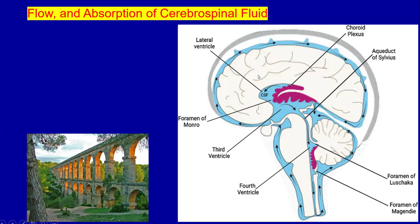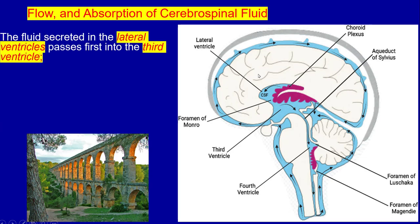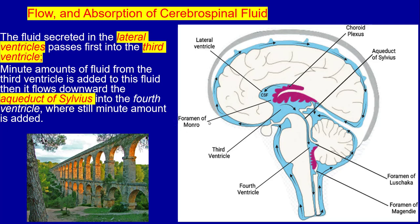These are the ventricles: the lateral ventricle, the third ventricle, and the fourth ventricle, where CSF is actually produced. Flow and absorption of CSF: the fluid secreted in the lateral ventricles passes first into the third ventricle through the foramina of Monro. A minute amount of fluid from the third ventricle is added, then it flows down the aqueduct of Sylvius into the fourth ventricle, where still more minute amounts are added.